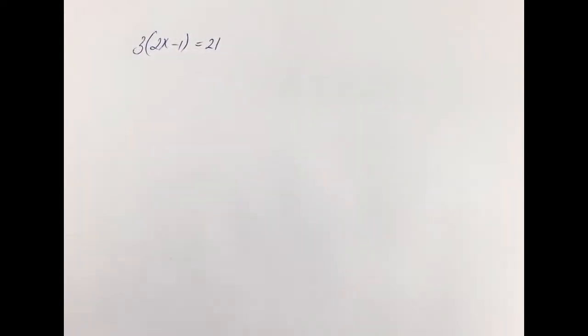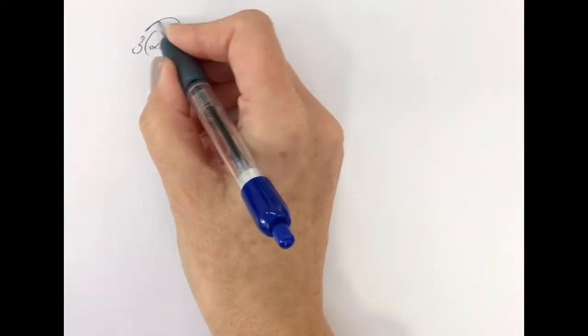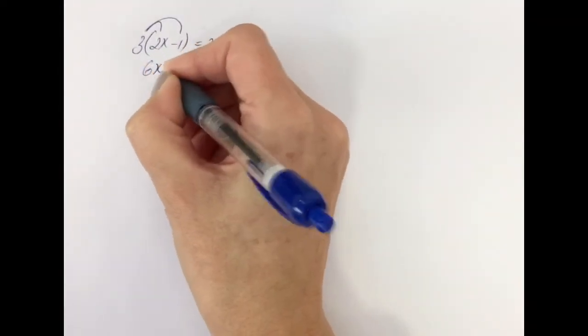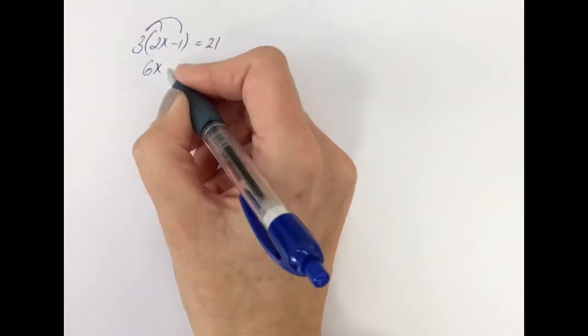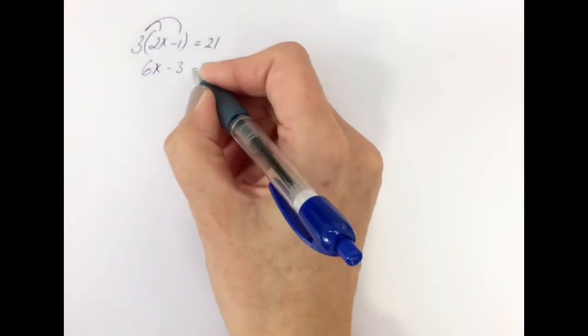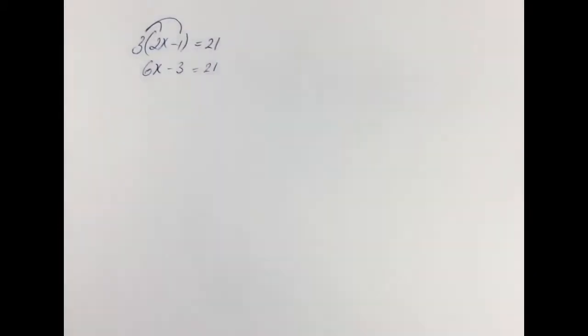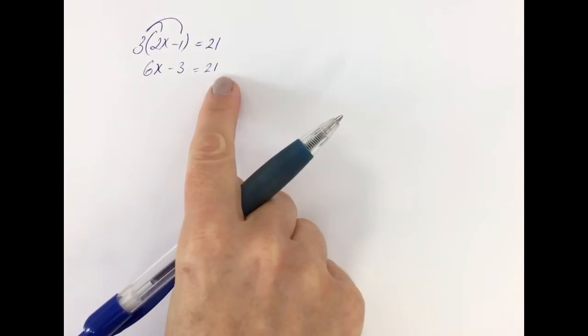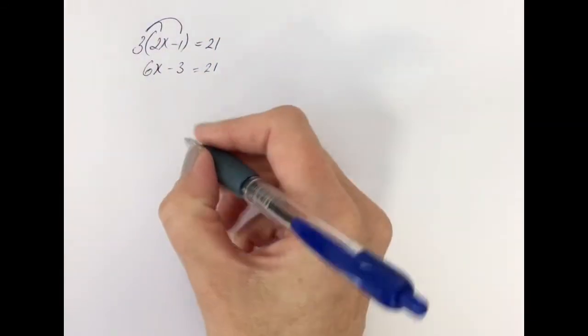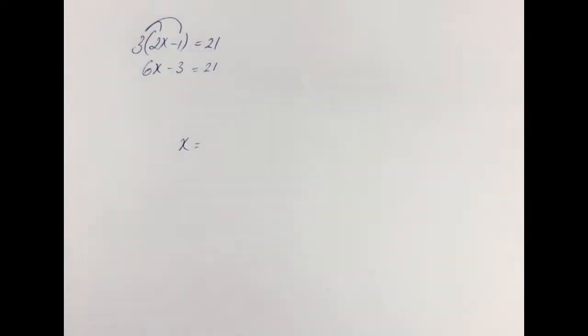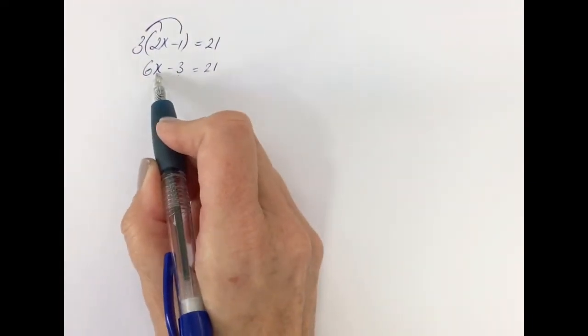Let's take a look at this one. If you feel confident, press pause and see how you get on. Otherwise, I'll show you how to deal with brackets. Whenever we have brackets, we must always multiply out the brackets. We're going to do 3 times 2x, which gives you 6x. 3 times minus 1 gives you minus 3, equals 21. Now we're left with something like we had before. We want to get x on its own, so we've got to get rid of the minus 3 and the 6 that's being multiplied.